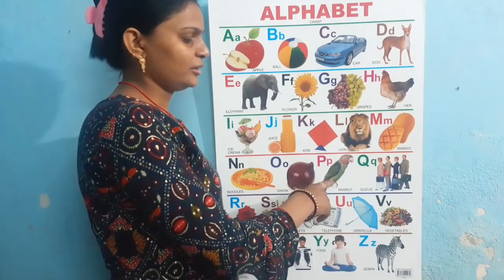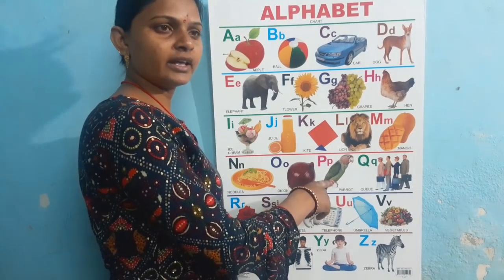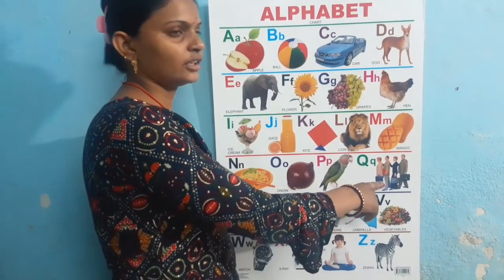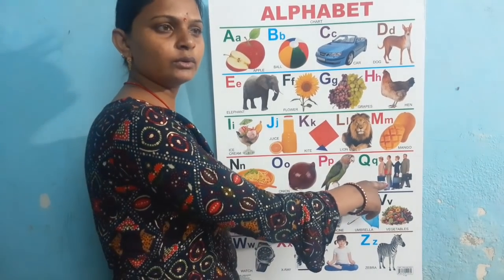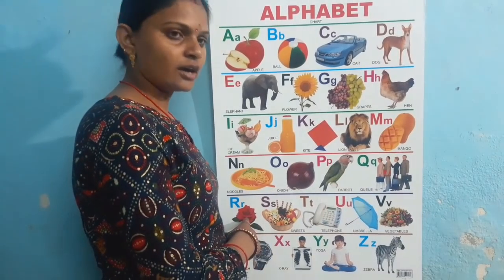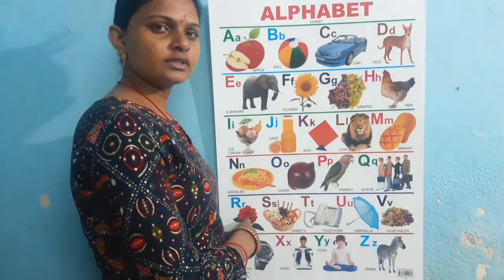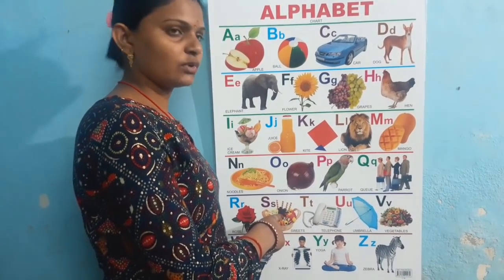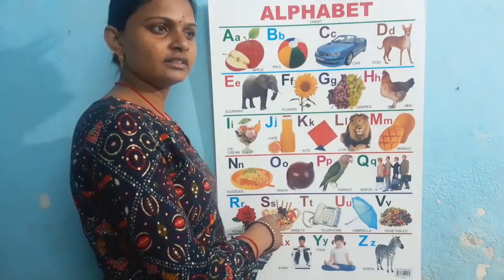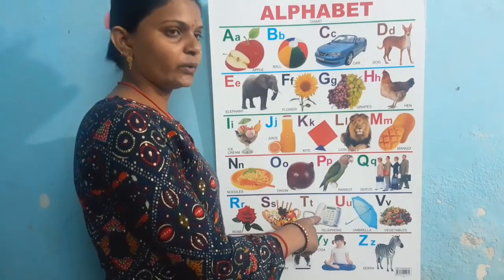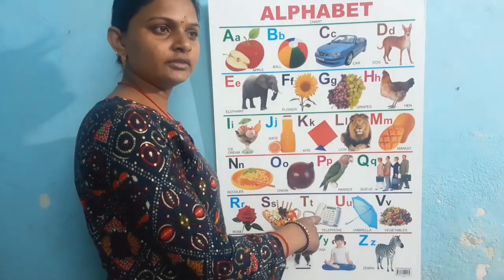P for parrot, Q for chew, R for rose, S for sweet, P for telephone.